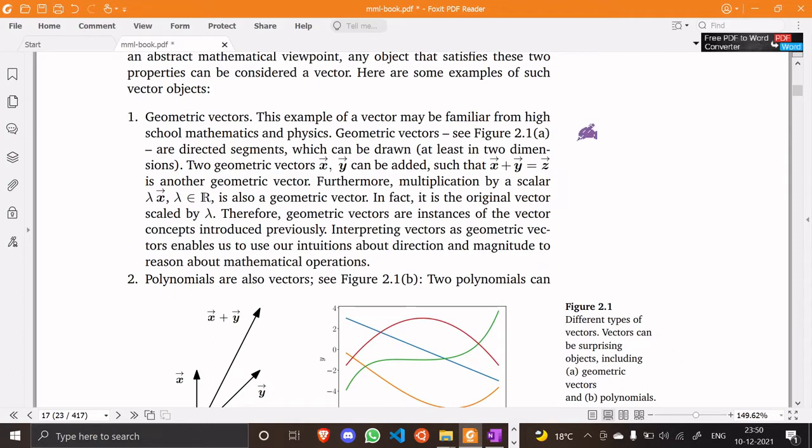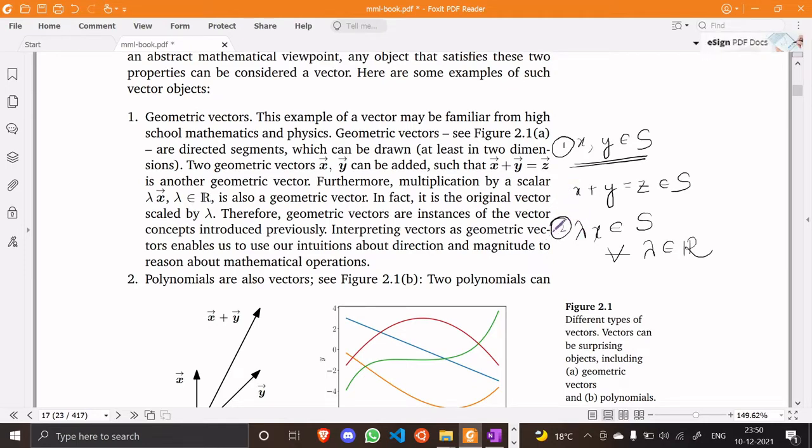Let's consider that we have two variables x and y which belong to some set s. Let's define that whenever we add these two variables their result z also belongs to s. Now consider one more operation. Take a number lambda and multiply it with an element of s and let's define that this also belongs to the set s for all lambda in the set of real numbers.